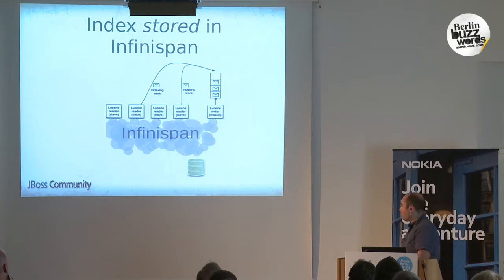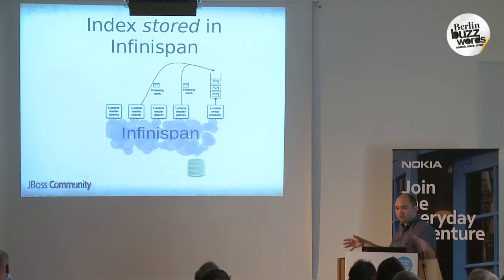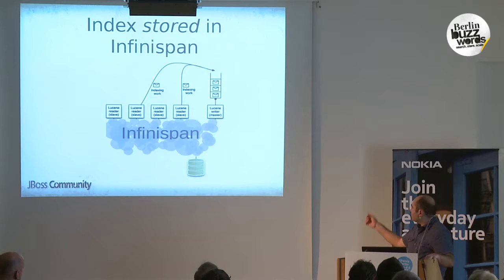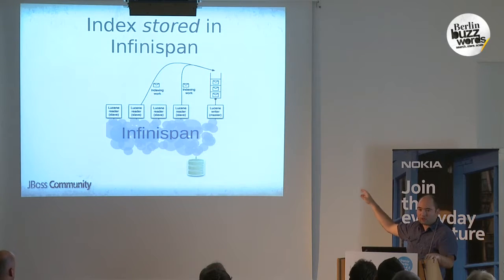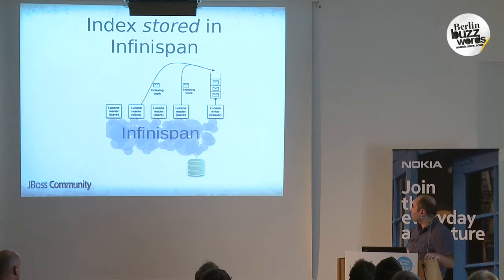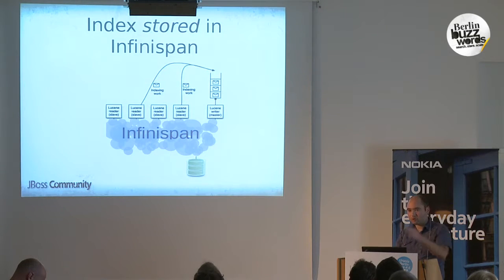So this is how it looks in the end. You still need the master pattern, because dealing with multiple concurrent writers would have been too complex and required many changes in Lucene. But you can still delegate to the writer on the master, and as soon as it commits, all the index readers on the other side will see the update as soon as they're refreshed. And of course I would expect you to pick a cache loader — S3 if you're running on the cloud, or Cassandra or HBase locally — anything to write it persistently so you can even shut down everything and restart.